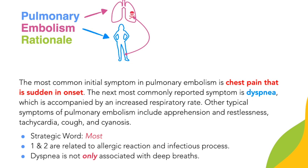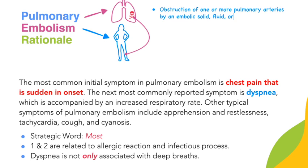More than likely in the case of pulmonary embolism, it travels from the legs in the case of deep vein thrombosis. Embolism can also originate in the heart and travel through the circulation, getting stuck in the brain and causing a stroke. We can define a pulmonary embolism as the obstruction of one or more pulmonary arteries by an embolic solid, fluid, or gas.